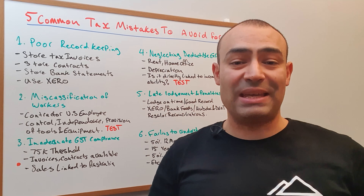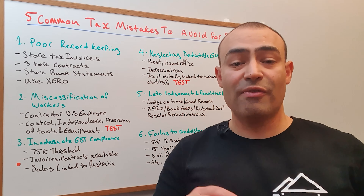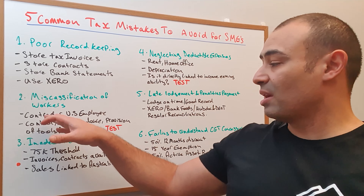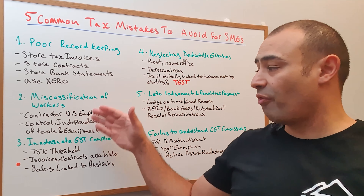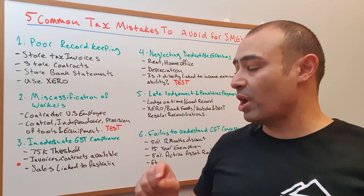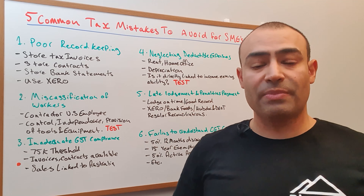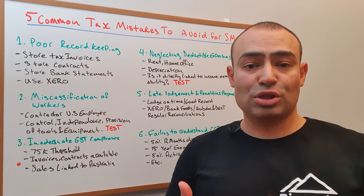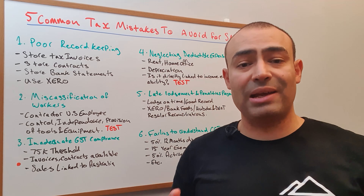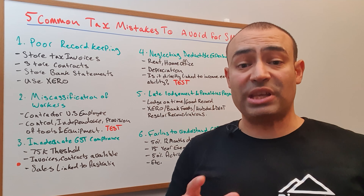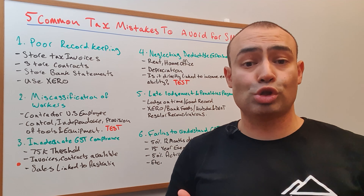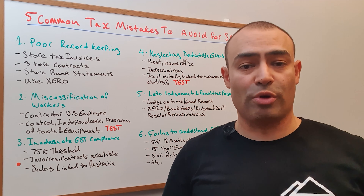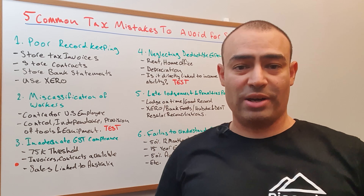The second mistake to avoid making is misclassification of employees versus contractors. Contractors are people who have control over their jobs, they are independent of the person who is engaging them, and they provide their own tools and equipment. That is a very important test. If the contractor is not independent, does not provide their own tools, and has set times in which they can and can't work, then most likely they're an employee rather than a contractor. What that means is potentially you will need to pay superannuation and ensure that you have benefits such as annual leave, long service leave, and so on.